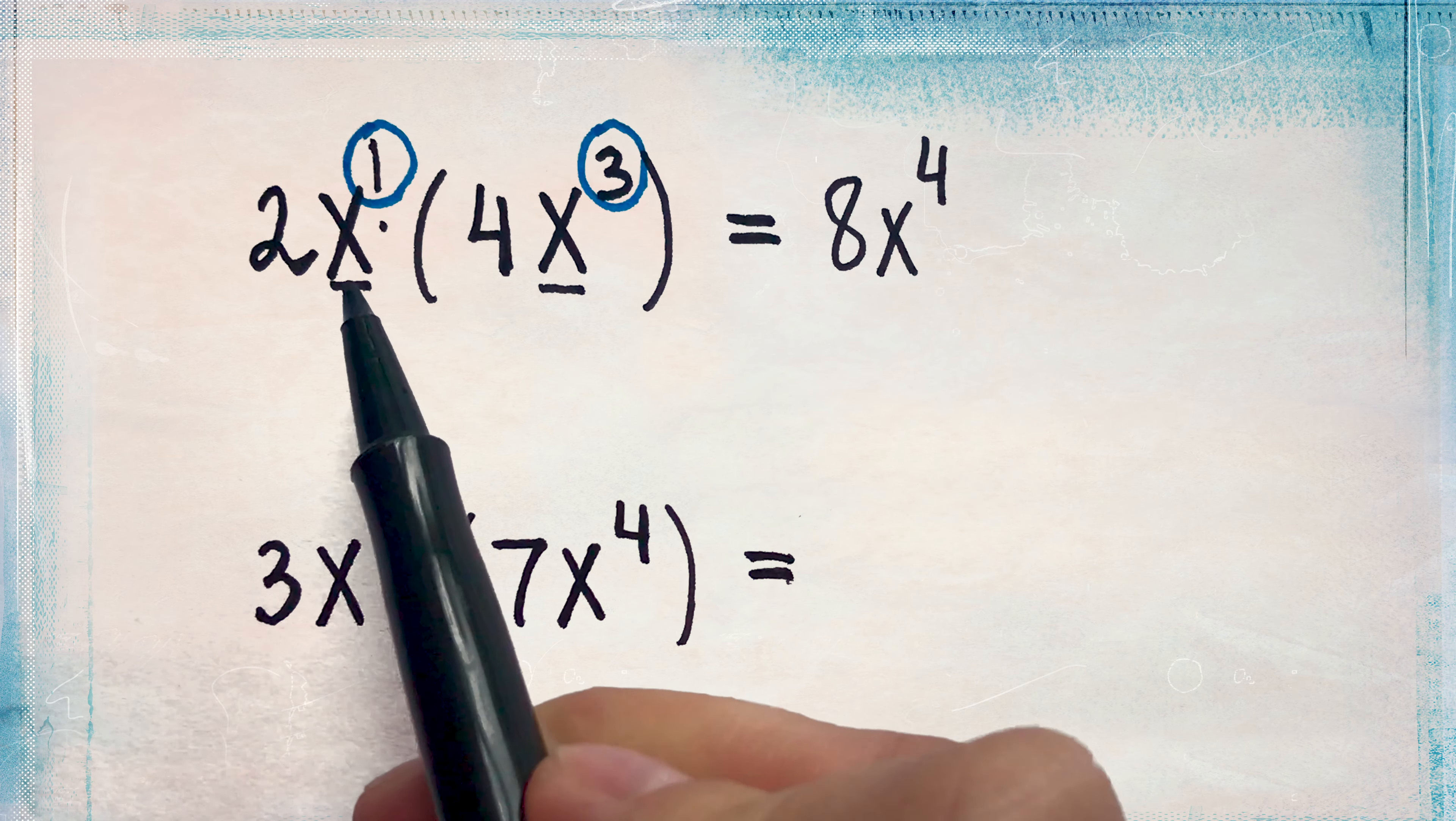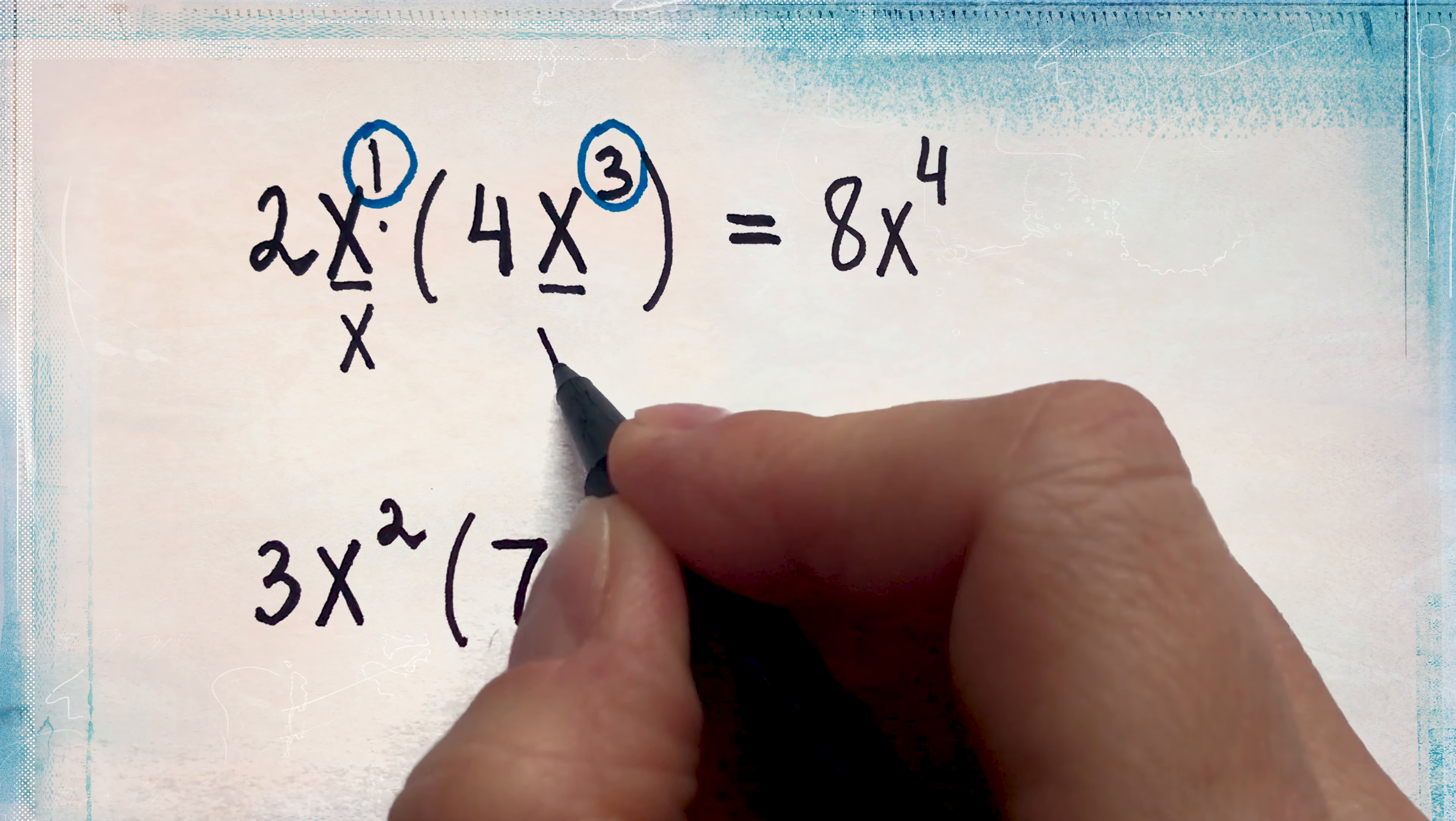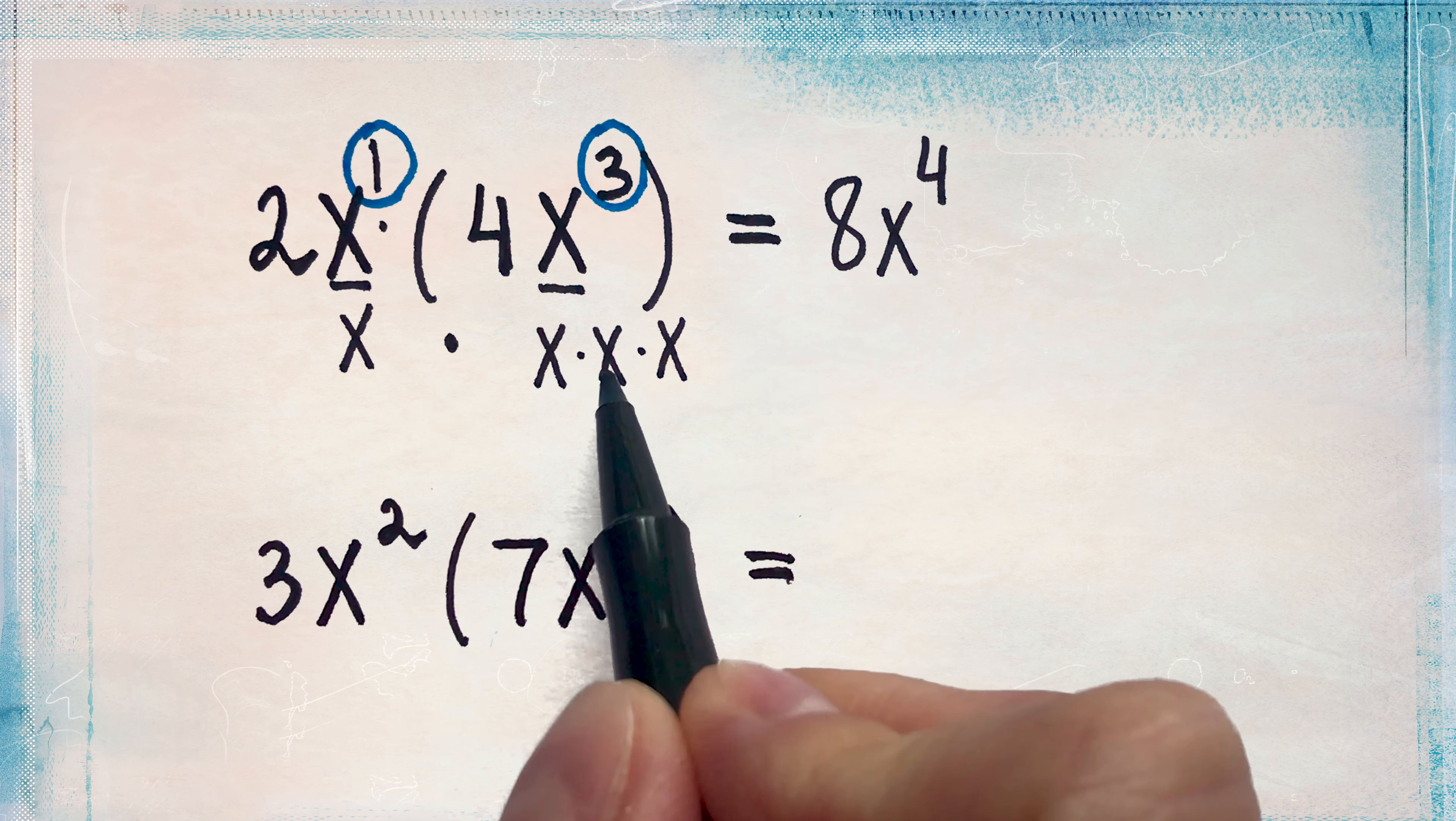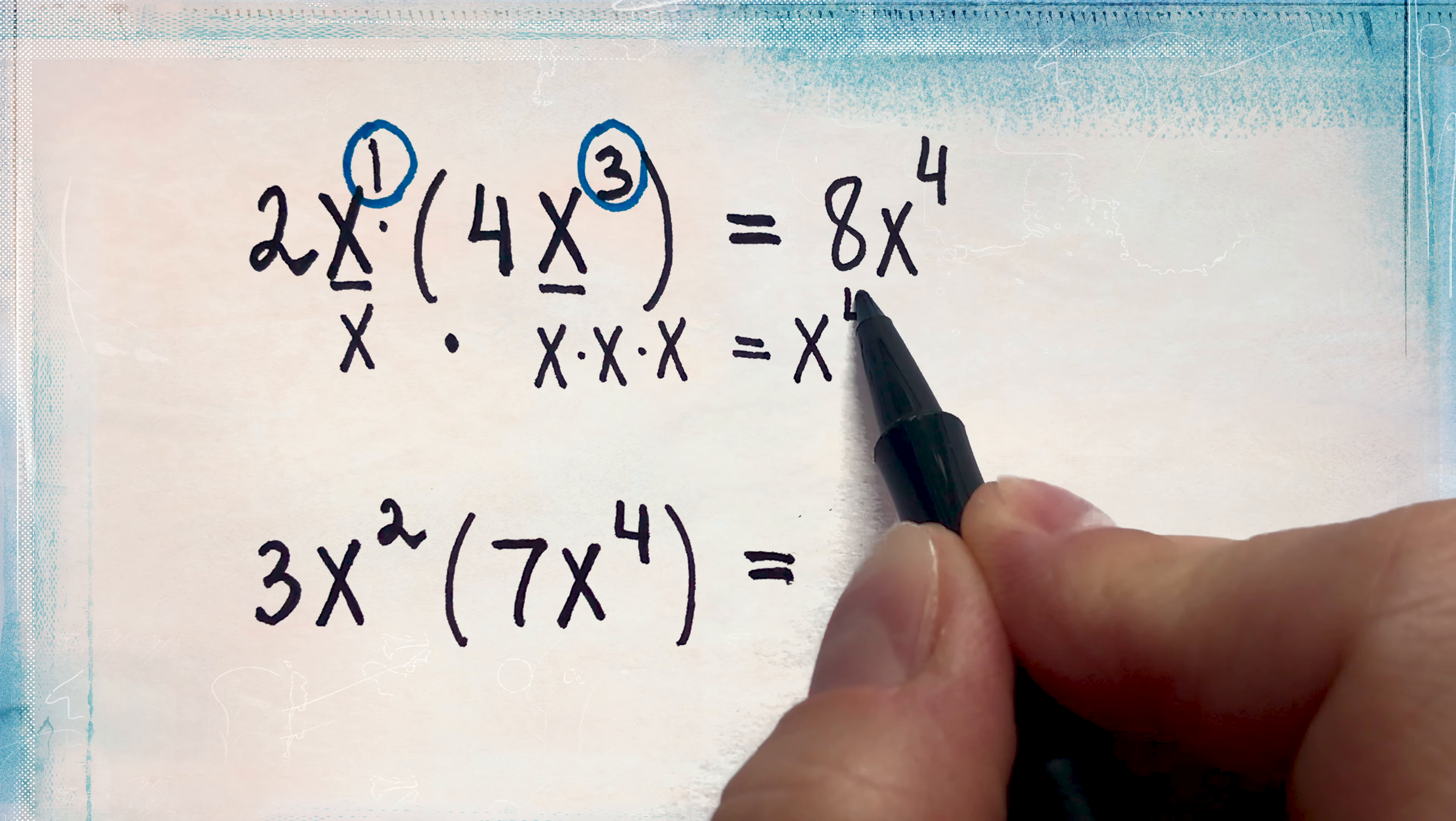Here is why we add the exponents. x to the power of 1, it's just x. x cubed, it means x times x times x. So when we multiply all these x's together, we see that x is multiplied by itself 4 times. So it means we have x to the power of 4.